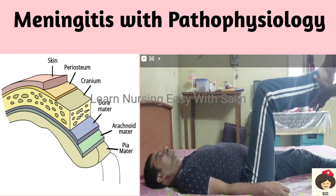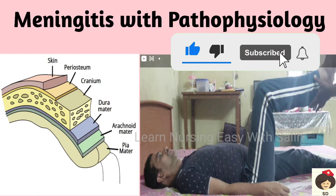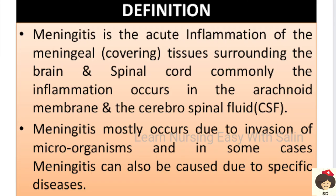Welcome to class. Today we'll be covering a topic in central nervous system disorders: meningitis. Meningitis means inflammation — any 'itis' is inflammation — so meningitis is inflammation of the meningeal layer. The meningeal layer is a membranous layer that covers the brain and spinal cord, and when this area becomes inflamed, the person develops meningitis. It is mainly caused by invasion of microorganisms.